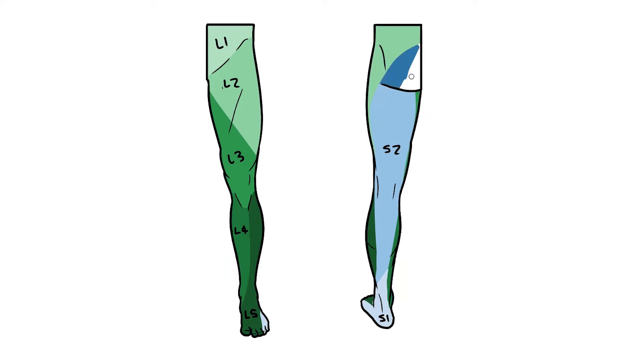Finally, S3 innervates skin over the gluteal region. If a nerve root gets damaged you'd expect to see lost or altered sensation across the entirety of its dermatome. However, it's worth remembering that although these areas are fairly well defined, there is some crossover between nerve roots at the margins of these areas.